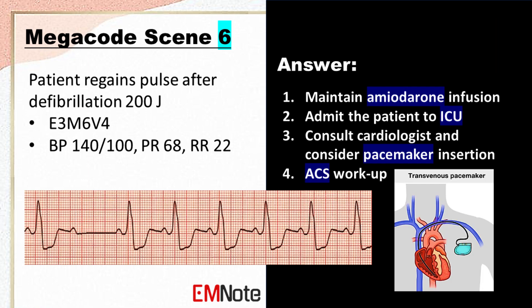The patient has experienced a life-threatening arrhythmia and requires close monitoring. The patient should receive a maintenance dose of amiodarone infusion and should be admitted to the intensive care unit. A cardiologist should be consulted to evaluate the patient and determine the underlying cause of the arrhythmia. The cardiologist may recommend pacemaker insertion if the patient is at high risk of further arrhythmias. An acute coronary syndrome workup should be performed to rule out a heart attack as the cause.